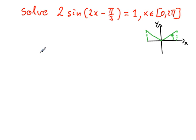So what we will do now, we'll simplify. Divide both sides by 2, and you get sine 2x minus pi over 3 equals 1 over 2.